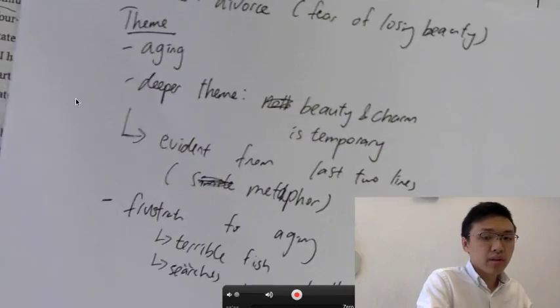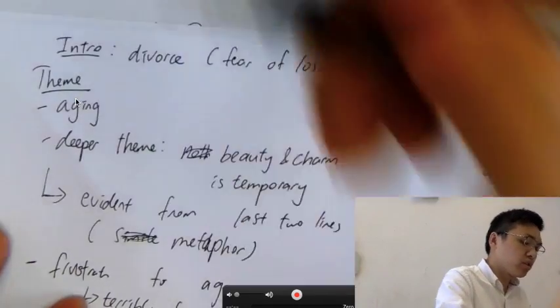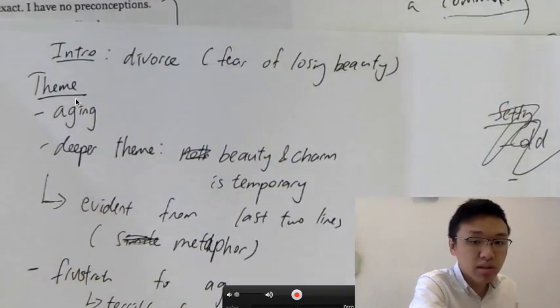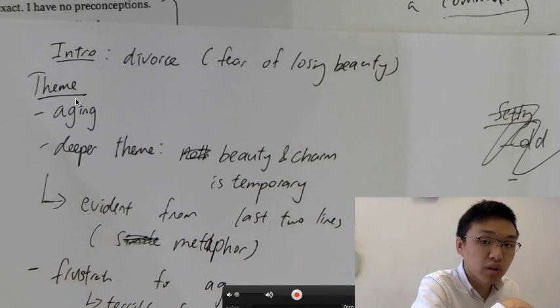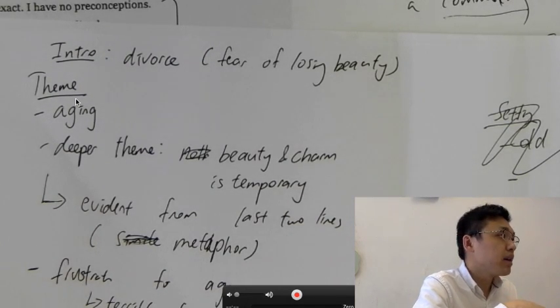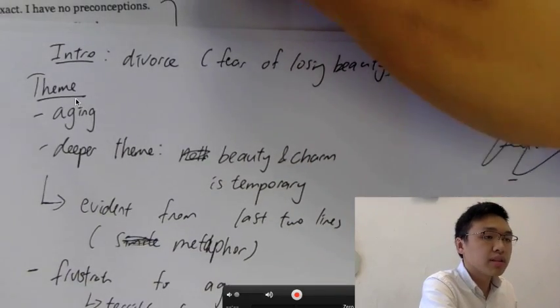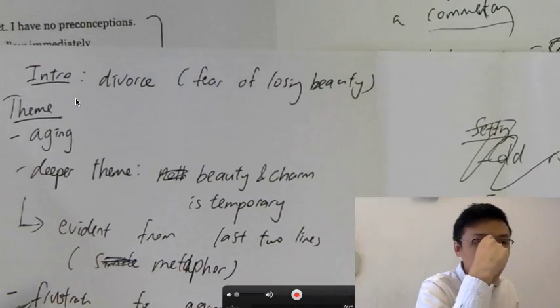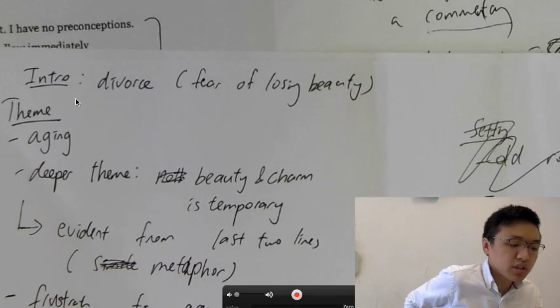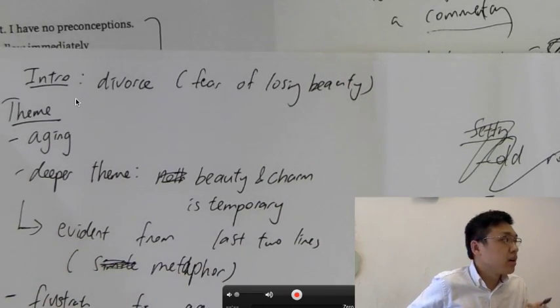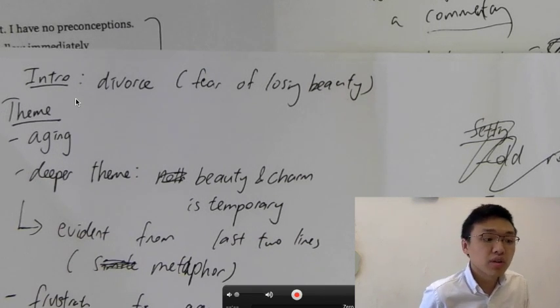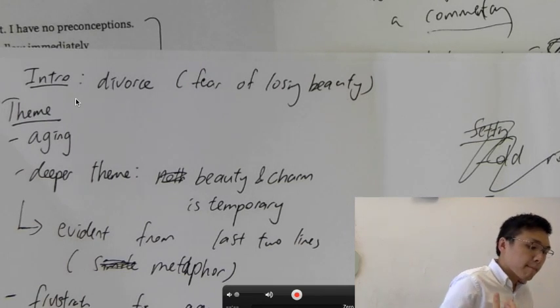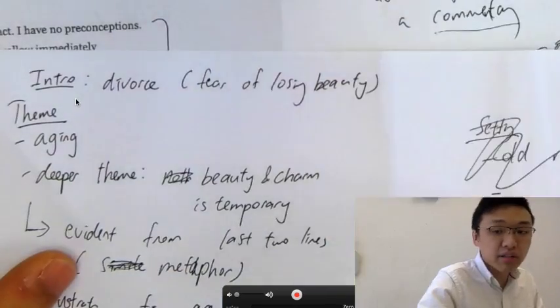So let me show you what I got here. The themes. Actually, let's start with the introduction. For the introduction, Sylvia Plath, if you do some research, actually, during the period of time when she was writing this poem, she was going through a divorce. So this poem, therefore, is about how she is afraid of losing her beauty. And since she is going through a period of divorce with her husband, it suggests that Sylvia Plath wrote this poem because she is worried and she is concerned that her husband is leaving her because of the fading beauty. So this is the context of how this poem, when this poem was written.